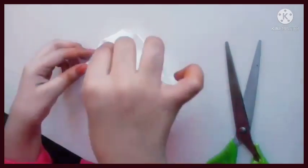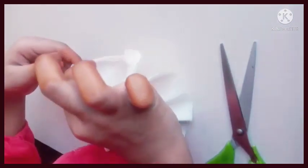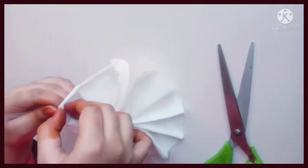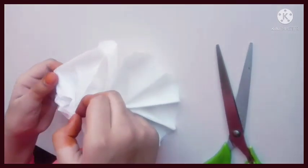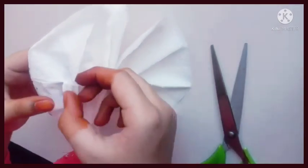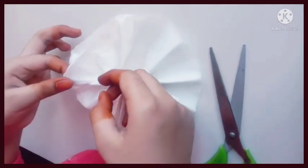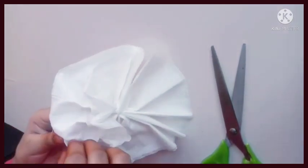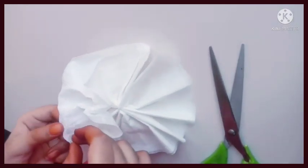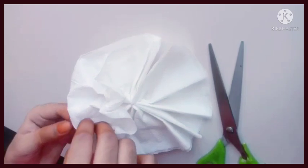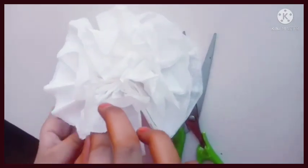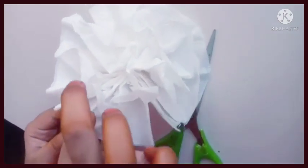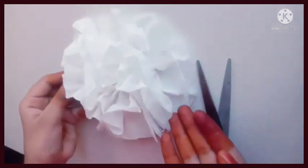Now we have to remove the tissue paper layers from it. We will get a nice and beautiful flower. See, one more layer. I am opening the last part of the tissue papers. See, this is a nice beautiful flower.